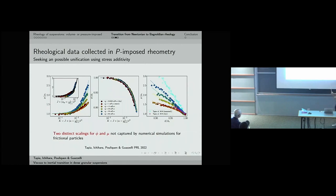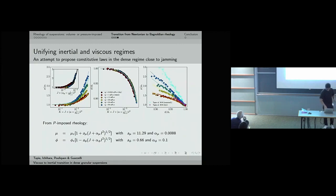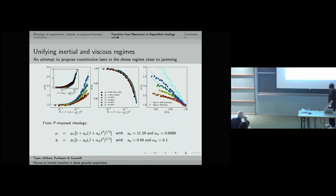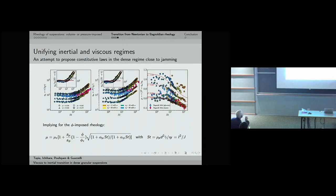An important conclusion – and probably interesting to explore further with Bernard – is that these two different collapsing rheological datasets are not captured by any numerical simulation for frictional particles. For pressure-imposed rheology we have two different asymptotic behaviors that are similar but have different characteristic Stokes numbers: α_φ and α_μ. By combining these two equations we obtain a new constitutive law for the effective friction coefficient as a function of packing fraction and Stokes number, which fits well from pressure-imposed to volume-imposed rheology.